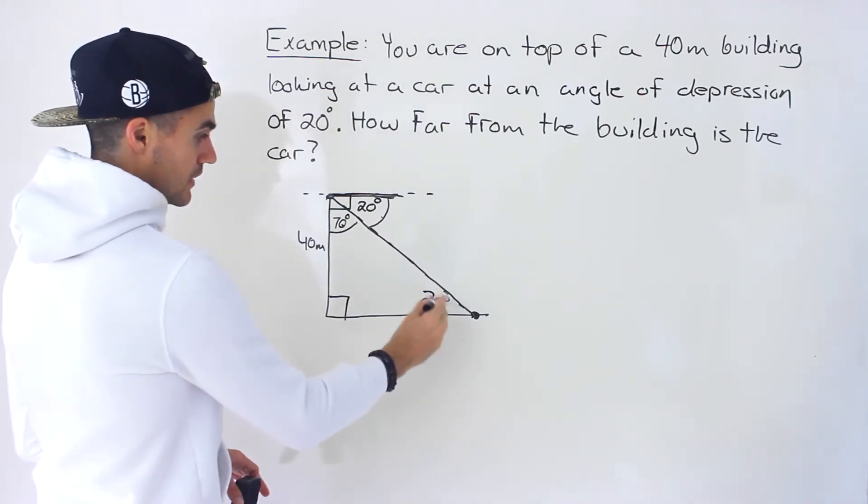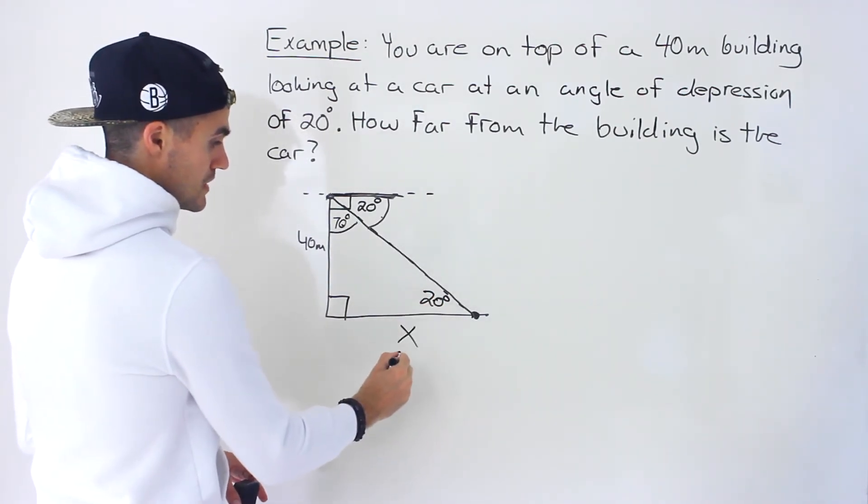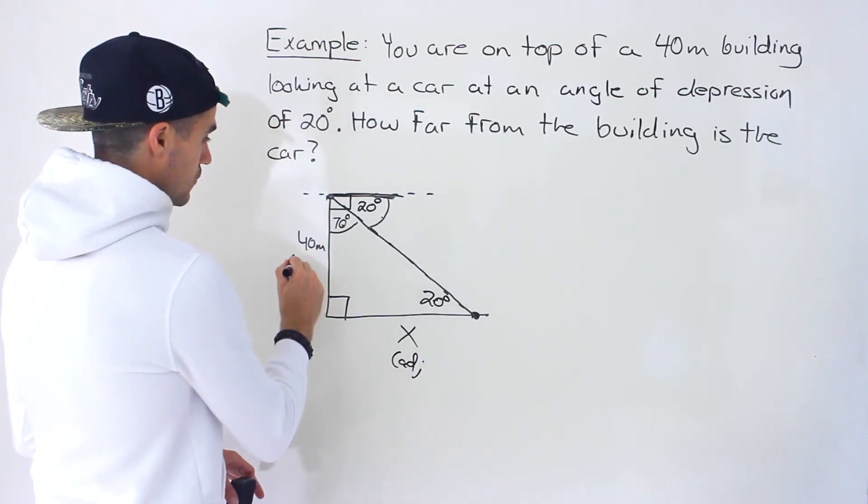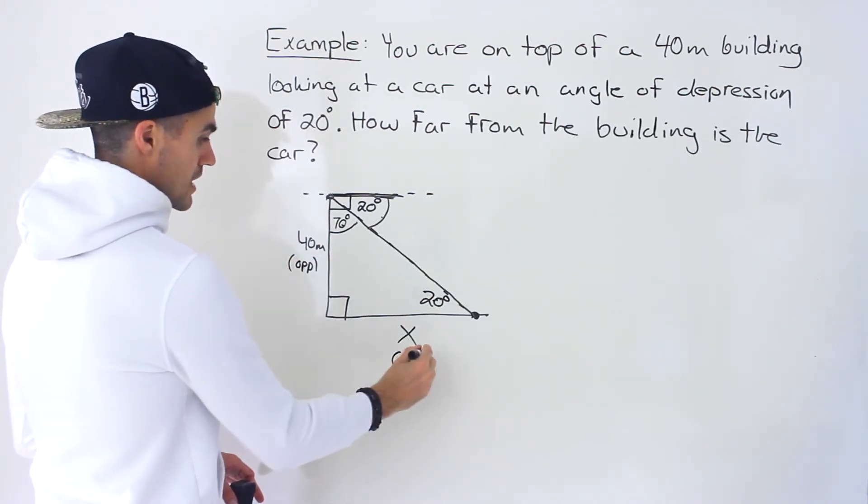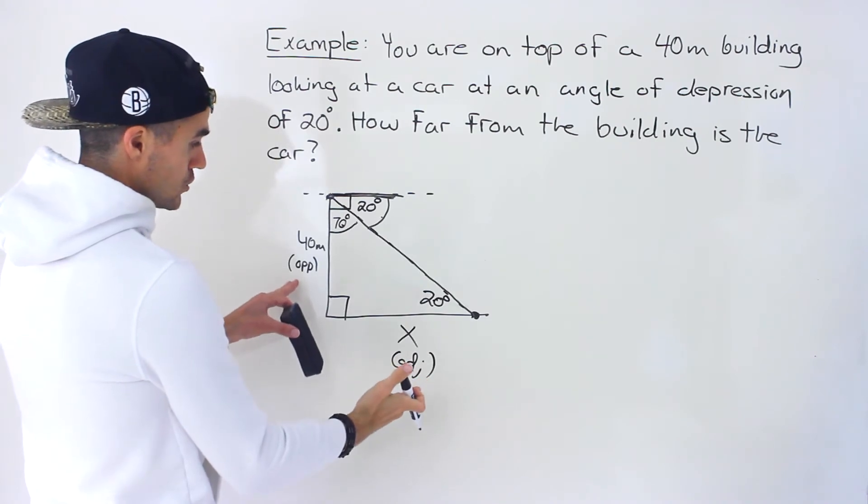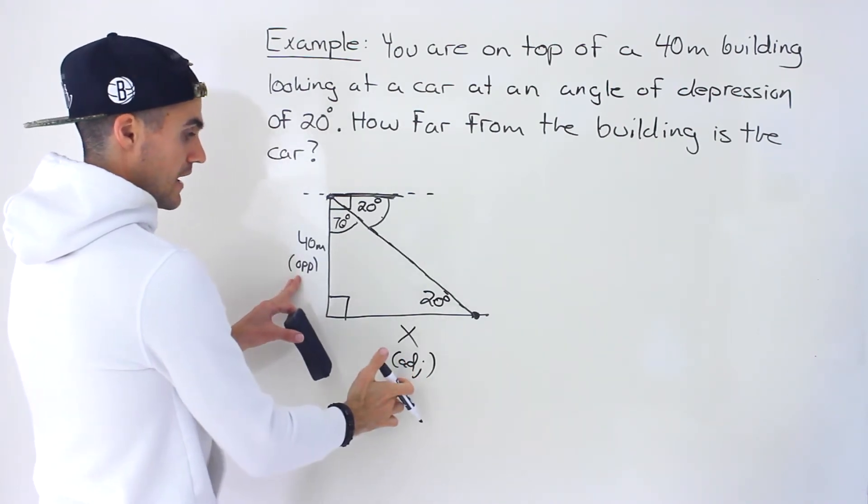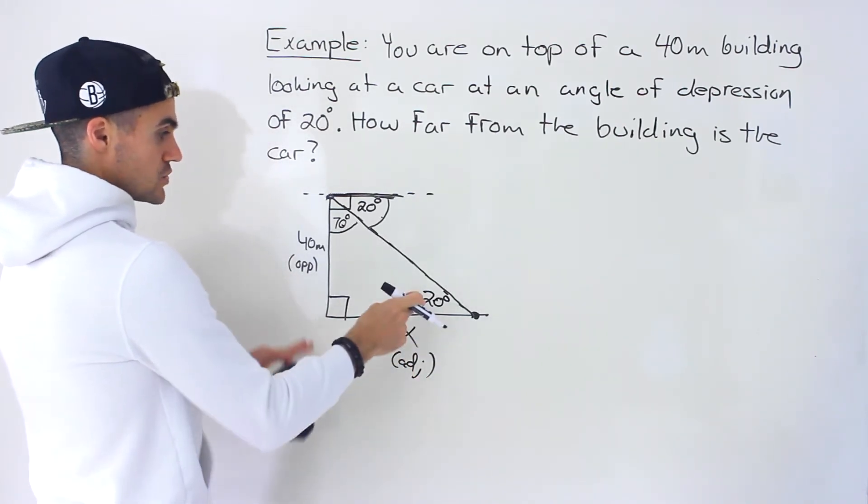So if we use this angle as the reference, this would be the adjacent side. This here would be the opposite side. And so which ratio uses the opposite and the adjacent, the tan ratio.